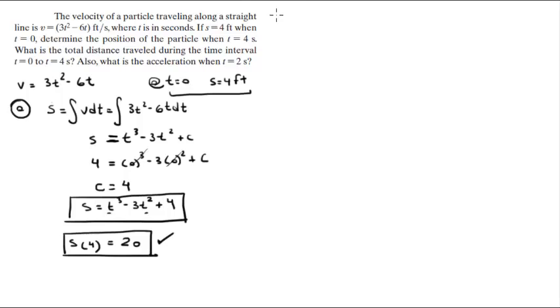Then they want you to know the total distance traveled. Let's call it part b. To find the total distance traveled, you got to get the equation for the velocity, which is 3t squared minus 6t, and set it equal to 0 and find out what are the values of t when v is equal to 0.